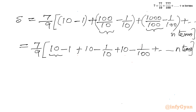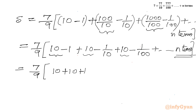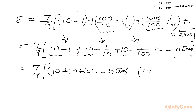Now you can see each split term gives a 10. How many 10s are there? The total number of terms times 10. So we can write 7 over 9 times: 10 plus 10 plus 10 up to n terms, and then minus bracket 1 plus 1 over 10 plus 1 over 100 and so on up to n terms.